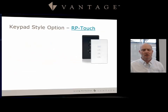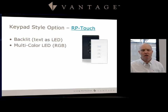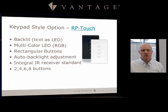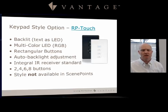The next station is the RP Touch station, which is also backlit with RGB multi-color LEDs. It has a rectangular shaped button, auto backlight adjustment, and an integrated IR receiver built in. This station can have two, four, six, or eight buttons. It is one of our premium lines and can have metal faceplates. It is not available with the Scene Point dimmers.